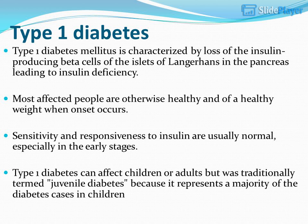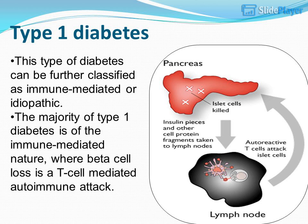Most affected people are otherwise healthy and of a healthy weight when onset occurs. Sensitivity and responsiveness to insulin are usually normal, especially in the early stages. Type 1 diabetes can affect children or adults, but was traditionally termed juvenile diabetes. It can be further classified as immune-mediated or idiopathic. The majority is immune-mediated, where beta cell loss is a T cell-mediated autoimmune attack.